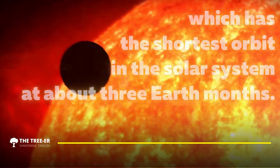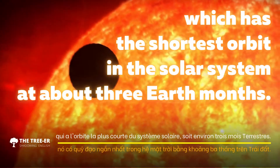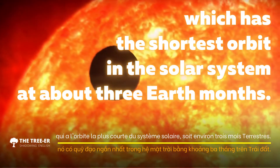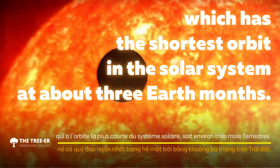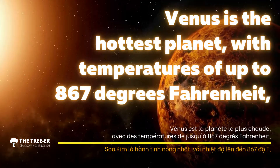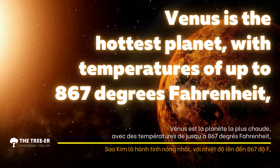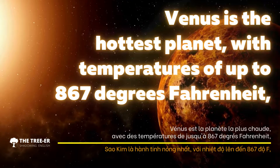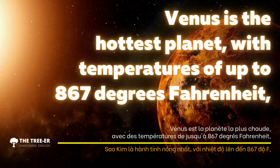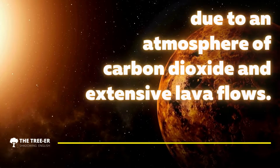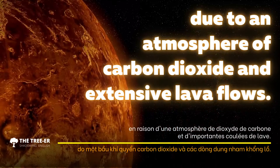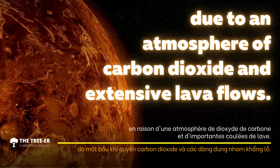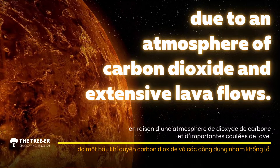The smallest and closest to the Sun is Mercury, which has the shortest orbit in the solar system at about three Earth months. Venus is the hottest planet, with temperatures of up to 867 degrees Fahrenheit, due to an atmosphere of carbon dioxide and extensive lava flows.